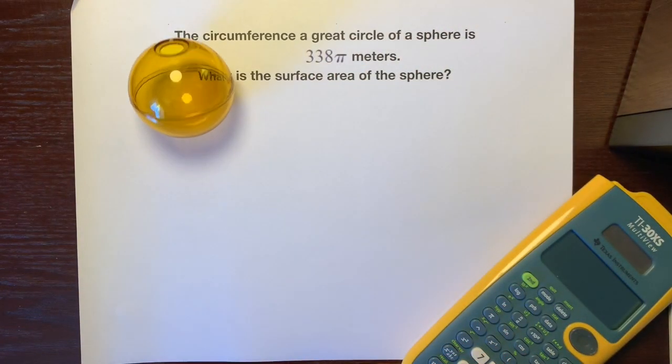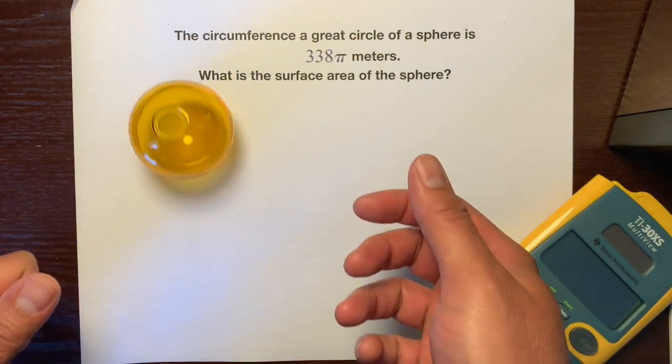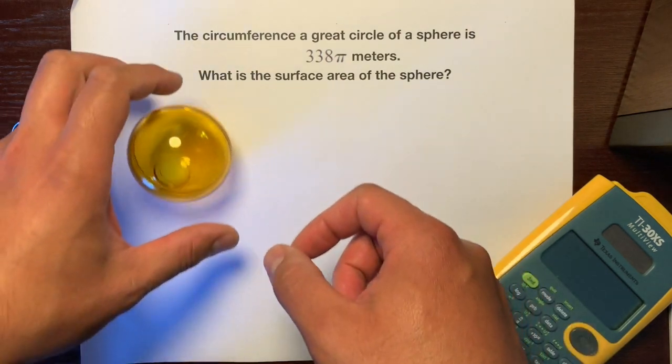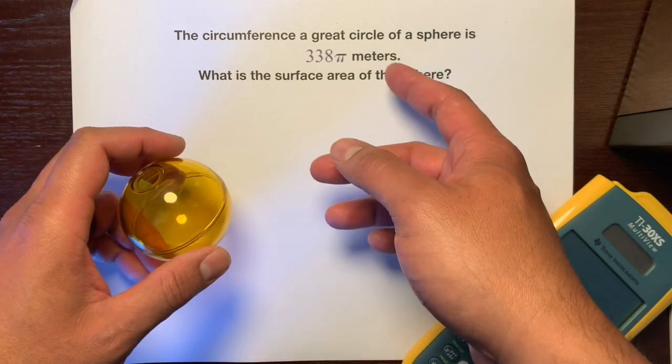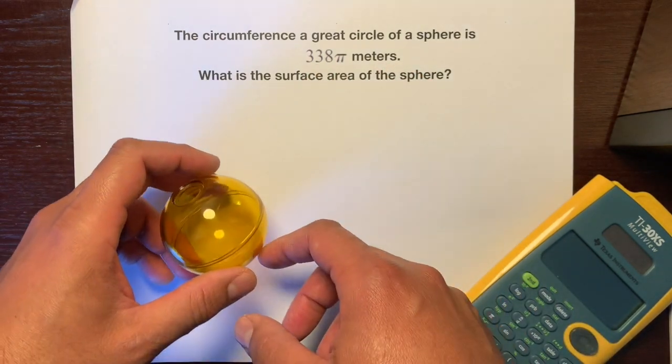Hello, this is Mr. Kinyanola, and I'm going to help you find the surface area of a sphere when they give us the circumference of a great circle of a sphere, which is 338π meters.